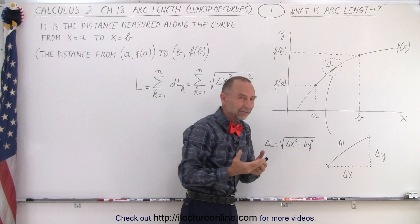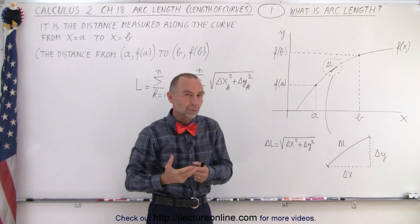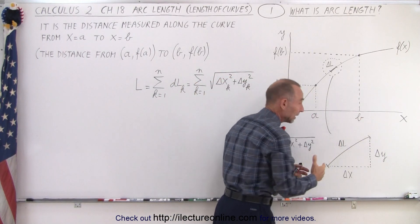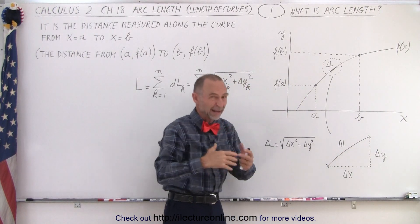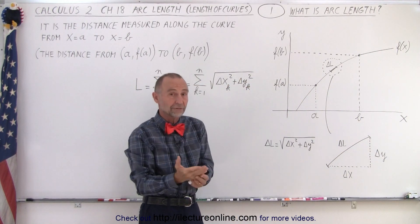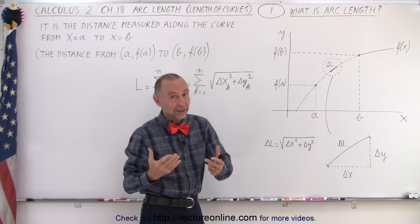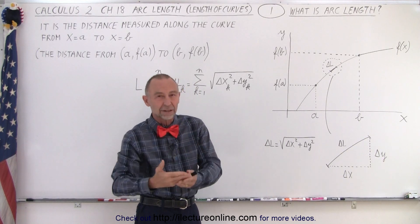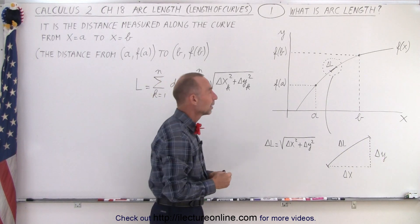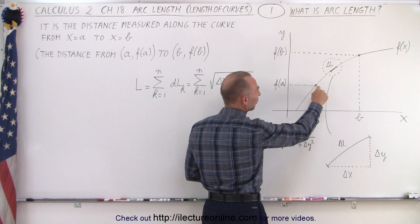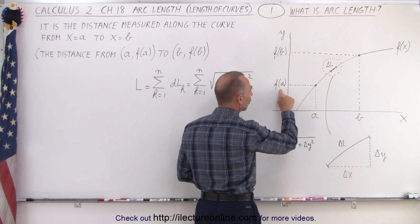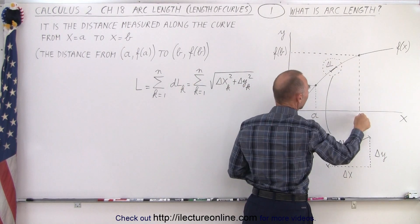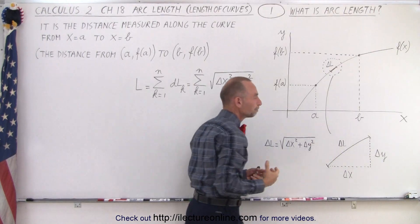Typically, the limits are given in terms of the x values — from x equals a to x equals b. They don't always say 'from x equals a to x equals b'; they just say 'from a to b,' and you have to realize they really mean x equals a to x equals b. Sometimes they will actually give you both the x and y coordinates of point one and the x and y coordinates of point two.